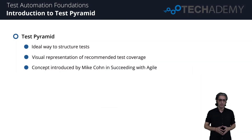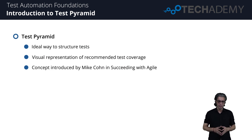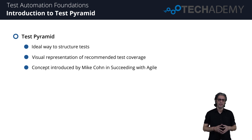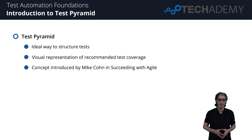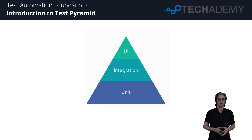Hi everybody and welcome back. Another model useful when planning test automation is the Test Pyramid. It explains an ideal way to structure tests and is a visual representation of the recommended amount of test coverage across each type of test. This concept was introduced by Mike Cohn in 2009 in the book 'Succeeding with Agile.' The Test Pyramid consists of three levels: unit tests at the base, integration tests in the middle, and UI tests at the top.